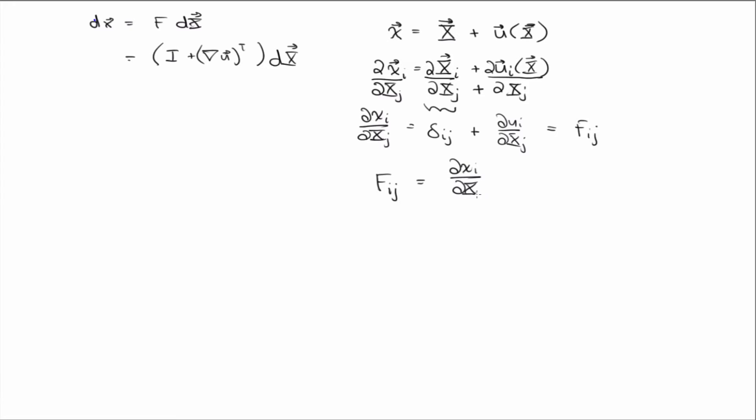And this equation I don't love, because if you don't remember that little x is functionally dependent on big X, you might think that you're taking the partial derivative of an independent variable with respect to an independent variable, which doesn't make sense, right? So keep in mind that little x is a function of big X_1, X_2, X_3.